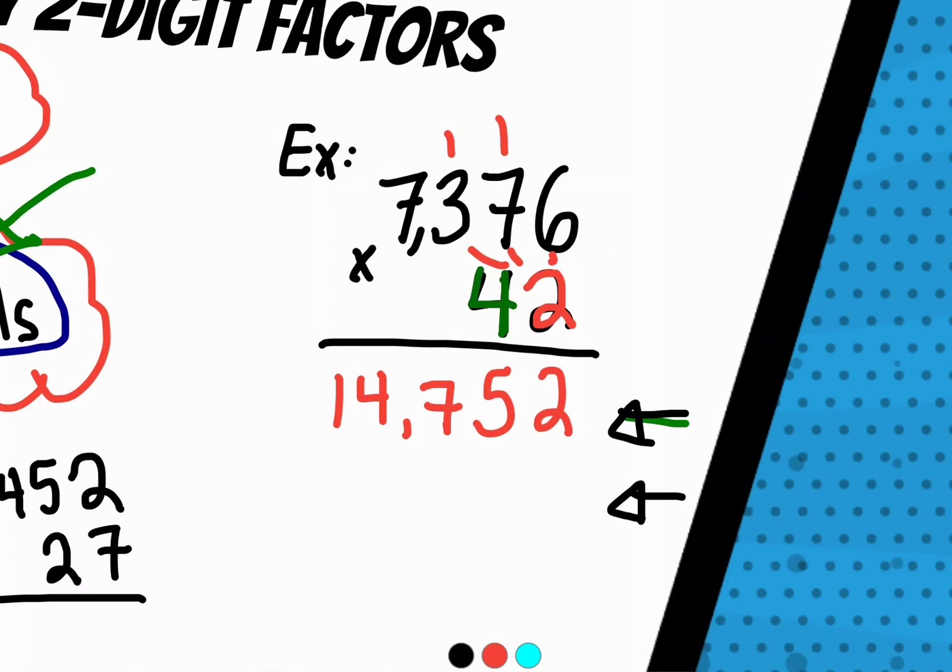Change that four to a green color. And I'm going to skip a line and put a zero. That's because I'm not multiplying it by four. I'm really multiplying it by 40. So cross out the ones. I don't need those anymore. Whatever I carried, I won't need it because it's a different color.